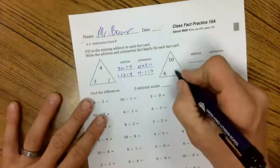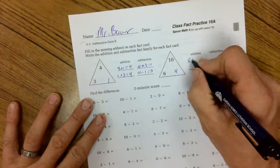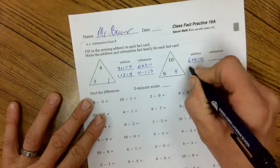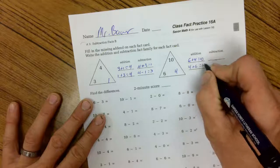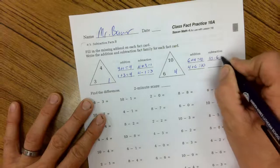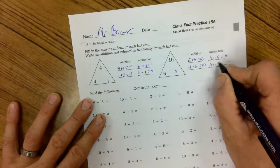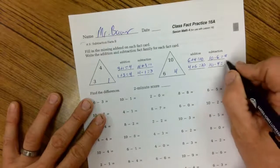That's supposed to be a minus sign. 10, 6, and 4. 6 plus 4 equals 10. 4 plus 6 equals 10. 10 minus 6 equals 4, and 10 minus 4 equals 6.